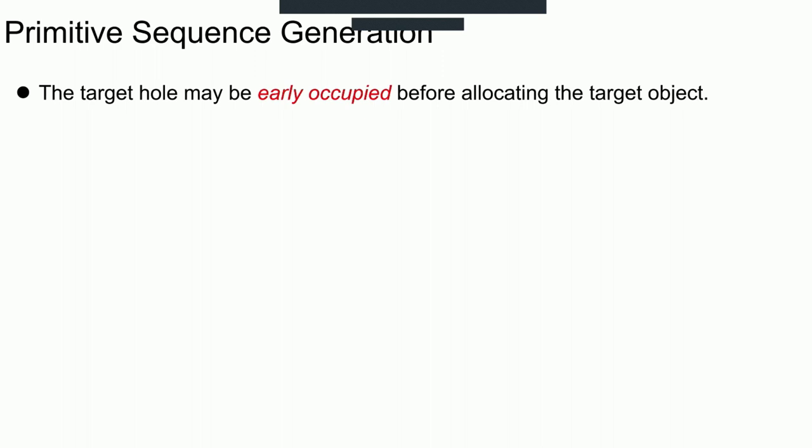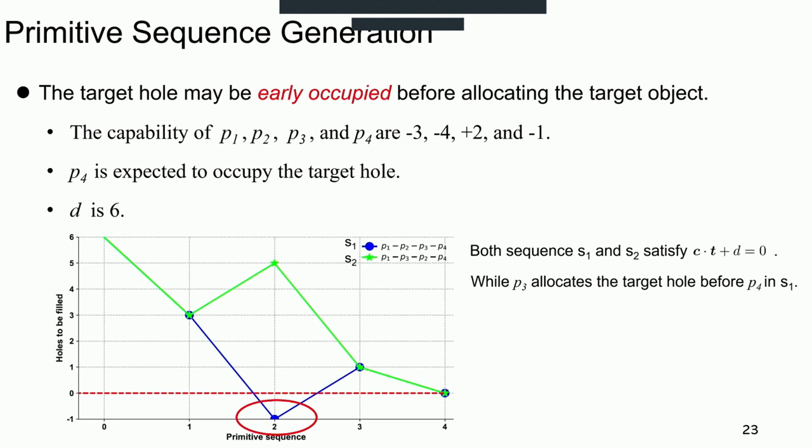After determining which primitives and how many invocations to use, next we sort them by specific order to generate primitive sequence. Considering that if too many allocations are put to the front of the sequence, the target hole will be already occupied before allocating the target object. Assume that the primitive 4 is supposed to occupy the target hole, but primitive 3 allocates the target hole before primitive 4 in the sequence with blue line.